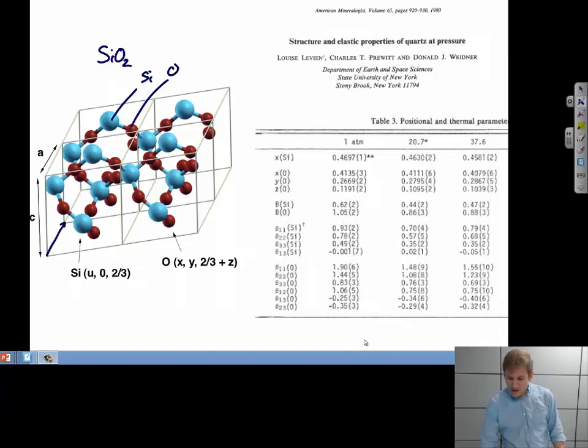We need the principal lattice vectors. We have A, B, and C. And these each have some magnitude, some length, and some orientation relationship relative to each other.